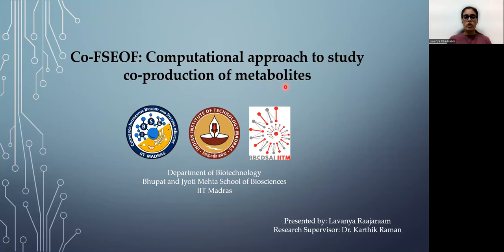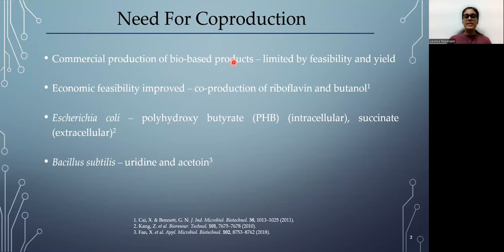Today I'm here to present Co-FSUF, a computational algorithm that we have developed to study co-production of metabolites. We all know that a lot of commercially valuable products are being produced using biological systems nowadays, but still many of the processes are limited by feasibility and yield when compared to the traditional chemical or petrochemical based processes. So how can we improve the economic feasibility of a given process is by coupling the production of two or more products.